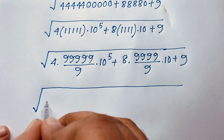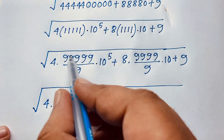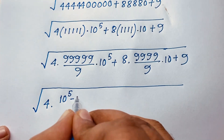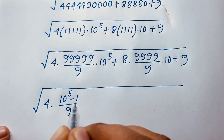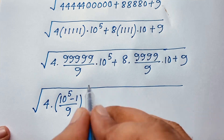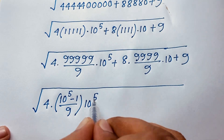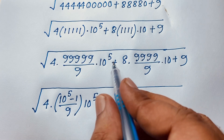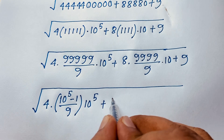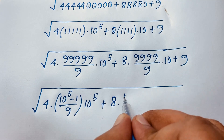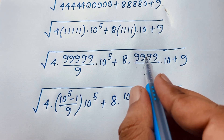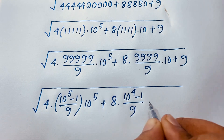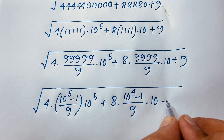Now you can easily see here the square root. Then here 4 times, and here is 59, so I can express this value: it will be (10 to the power 4) — 5 minus 1 — over 5 minus 1, over 9, times 10 to the power 5. At this moment: 8 times 10 to the power 4 — here is 49, so 4 minus 1 — over 9, times 10, plus 9.